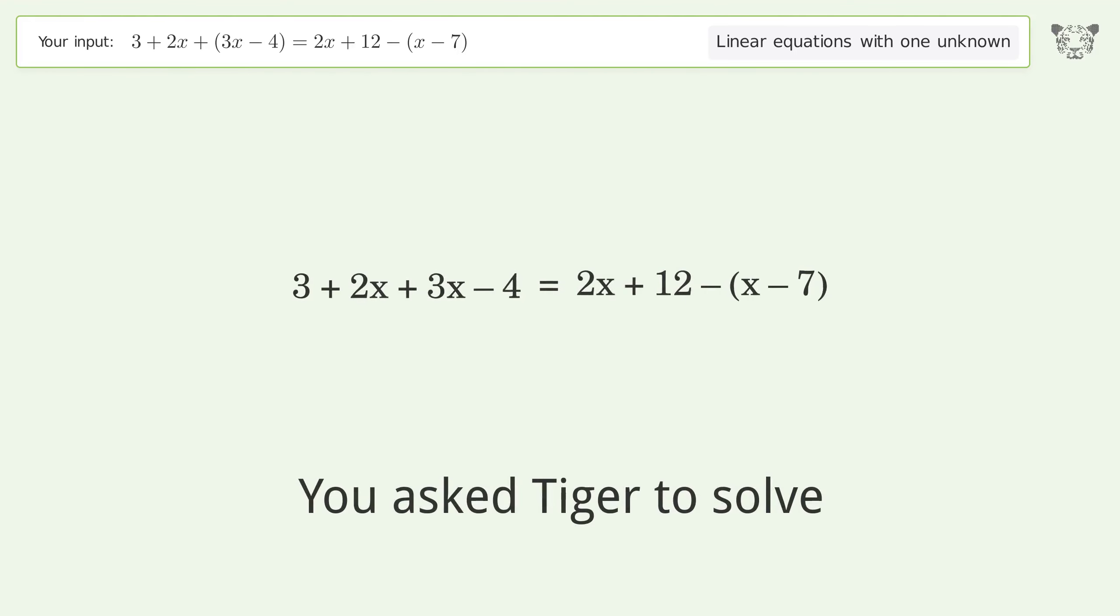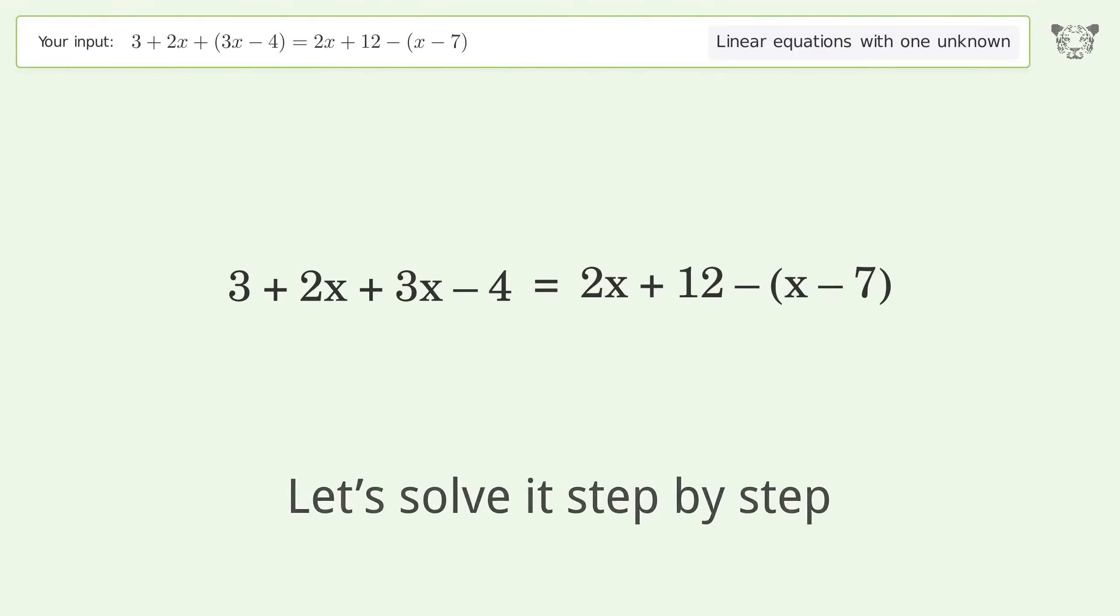You asked Tiger to solve this. This deals with linear equations with one unknown. The final result is x equals 5. Let's solve it step by step. Simplify the expression, group like terms.